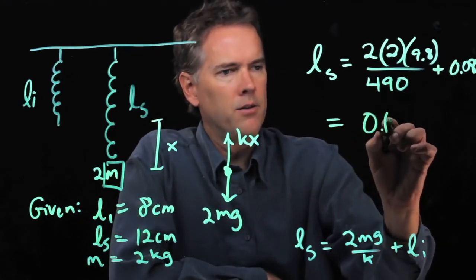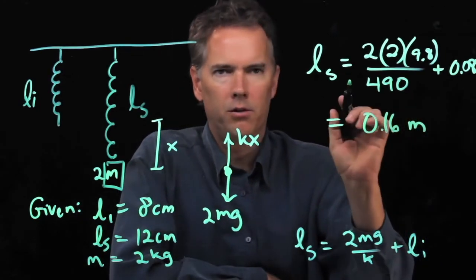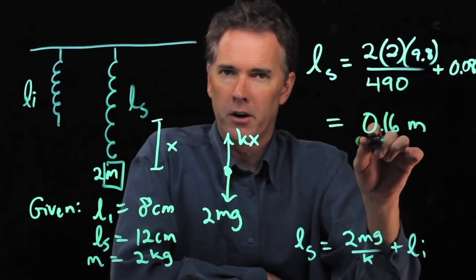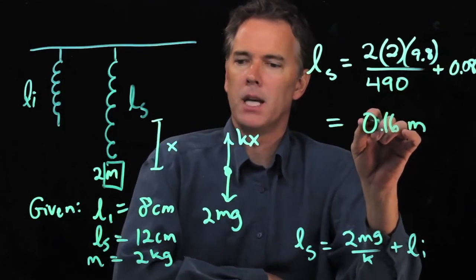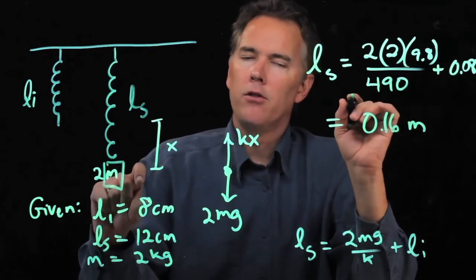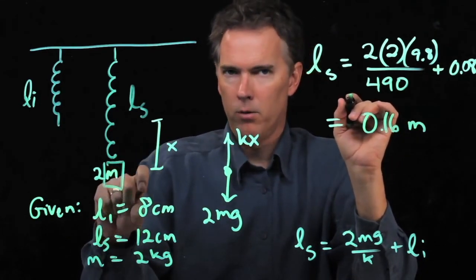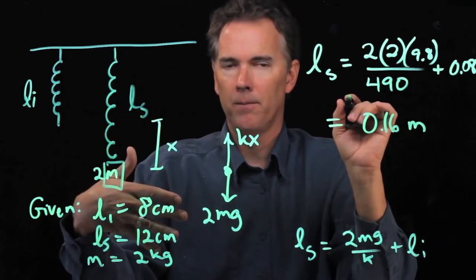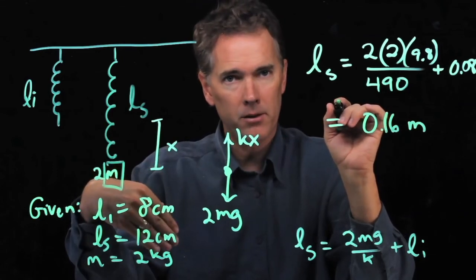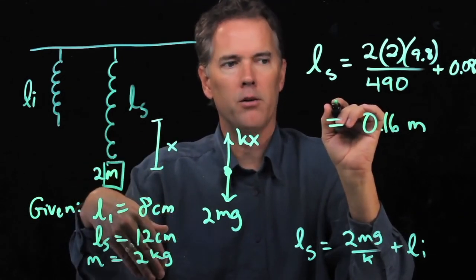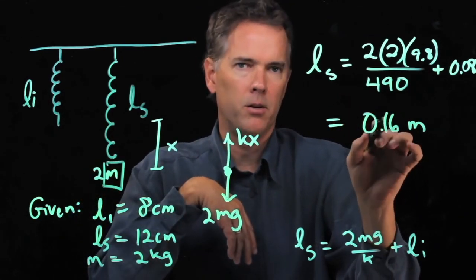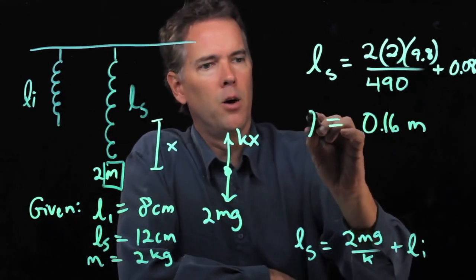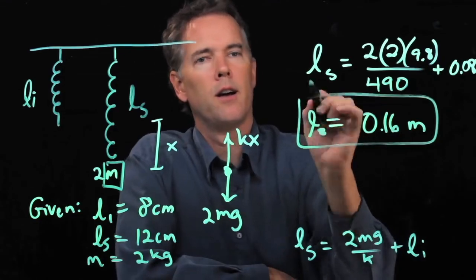I got 0.16 and the units are of course meters. Now you probably could have figured this out already. Because 8 stretched to 12 with one mass on it, that's a difference of 4 centimeters. How far is it going to stretch with two of those masses on it? Another 4 centimeters, which would be 16 centimeters or 0.16 meters. Alright. Hopefully that's clear. Cheers.